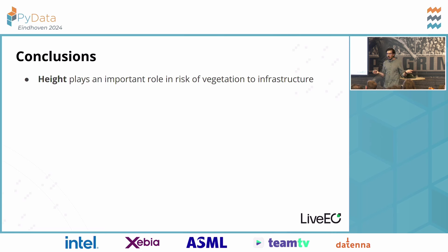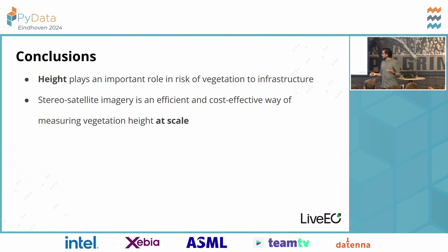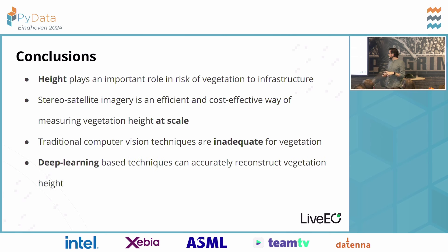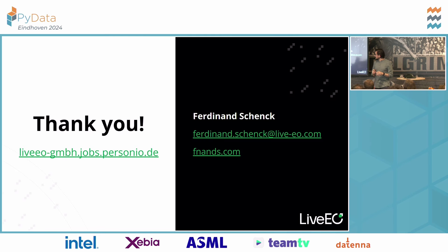Conclusions: height plays an important role in the risk that vegetation poses to infrastructure. Stereo satellite imagery is an efficient and cost-effective way of measuring vegetation height at scale. Traditional computer vision techniques are inadequate for vegetation, but deep learning-based techniques can actually reconstruct vegetation height from satellite imagery.